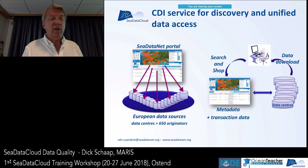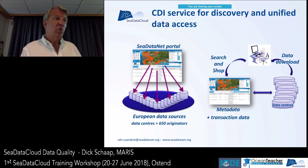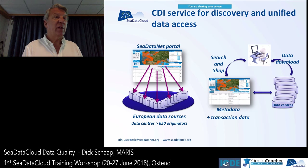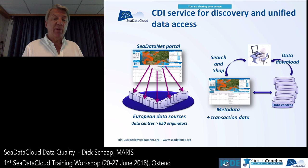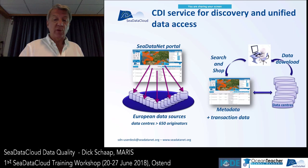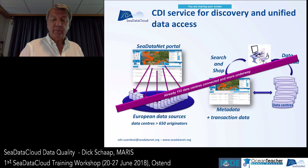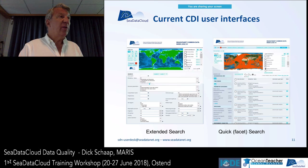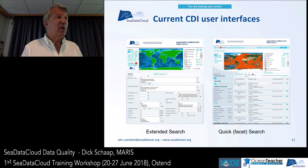In the old setup we have all the individual data centers — now more than 110 — managing data for many originators. We presently have about 650 originators, which could be universities storing their data in NODCs, national oceanographic data centers. On the other side we have a common metadata catalog with a shopping mechanism, allowing people to find, request access, and download data from this infrastructure.